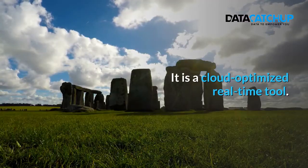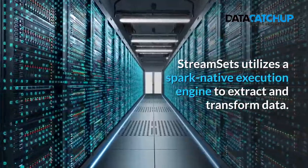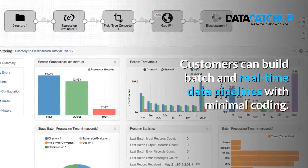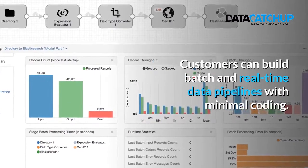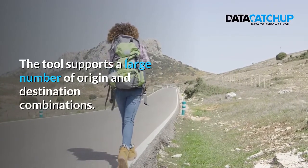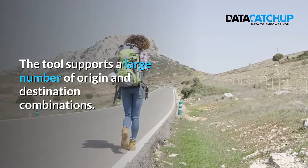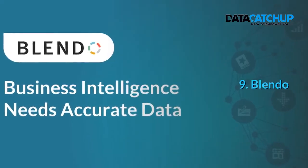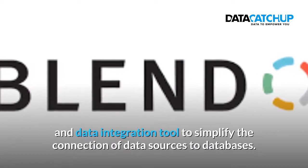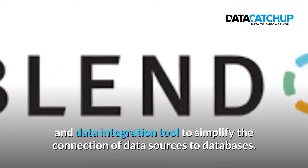Eight, StreamSets. StreamSets is a data-ops tool that has data monitoring capabilities that stretch beyond the traditional ETL. It is a cloud-optimized real-time tool. StreamSets utilizes a Spark native execution engine to extract and transform data. Customers can build batch and real-time data pipelines with minimal coding. The tool supports a large number of origin and destination combinations.